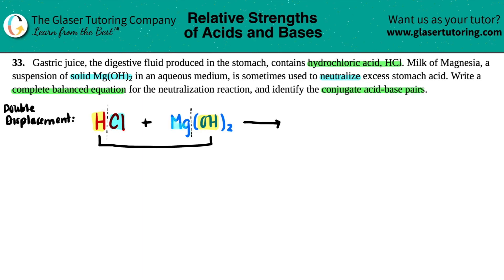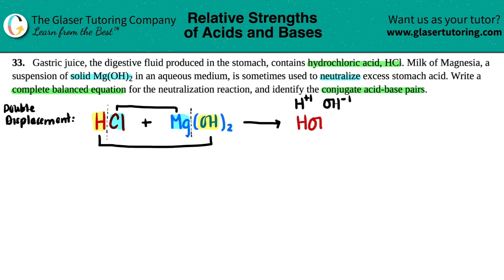And the inners go with inners, so Cl is going to hook up with Mg. These are your two new components on the product side. We'll do the outers first. H coming together with OH — it doesn't matter that there are two of them, you're just taking the ions. H is always a plus one, and hydroxide is always a negative one. We crisscross the charges: one and one cancel out, so we get HOH, which is H₂O.